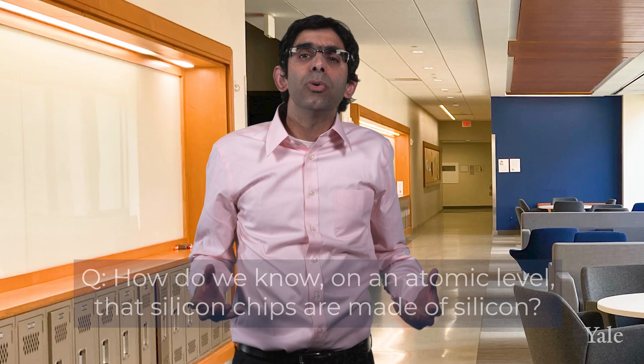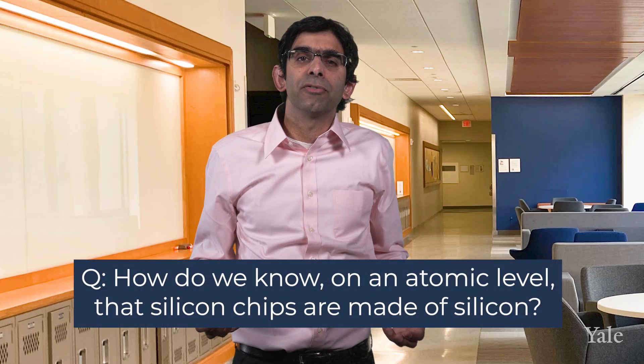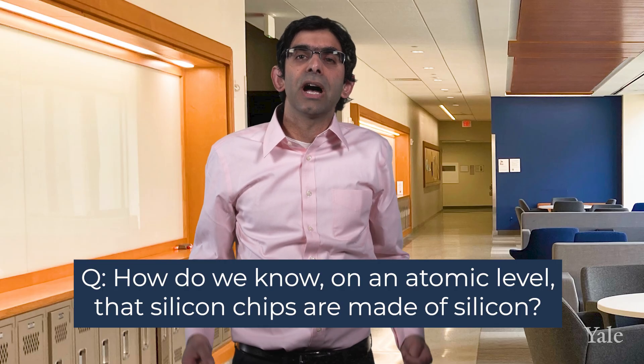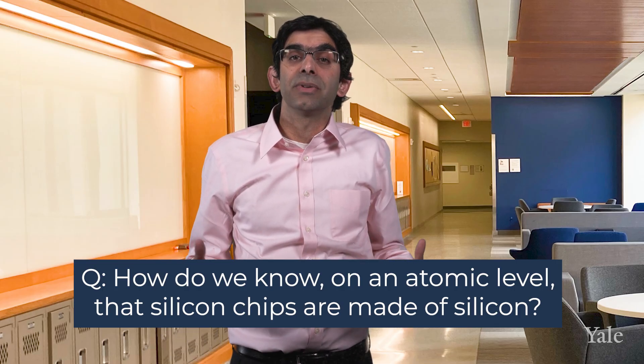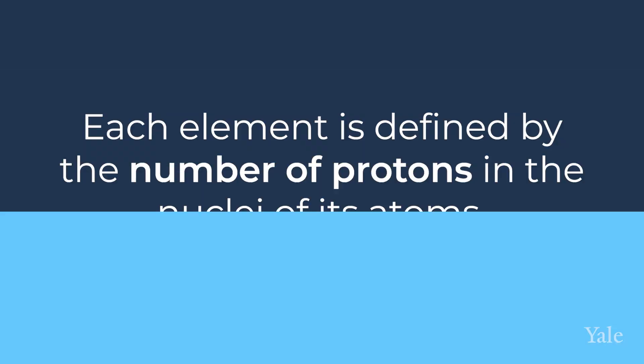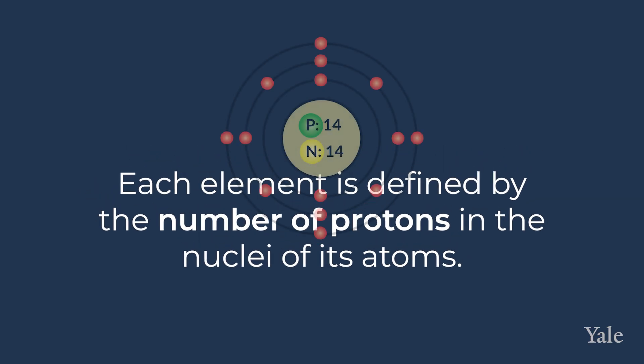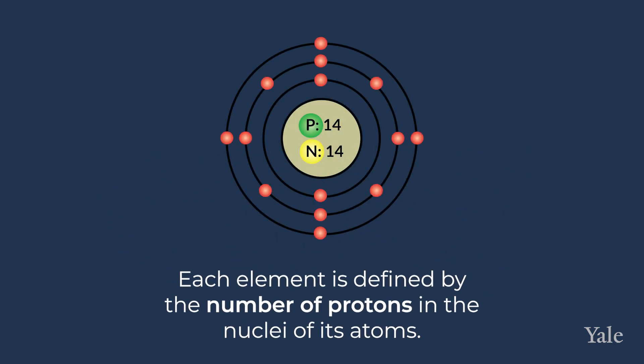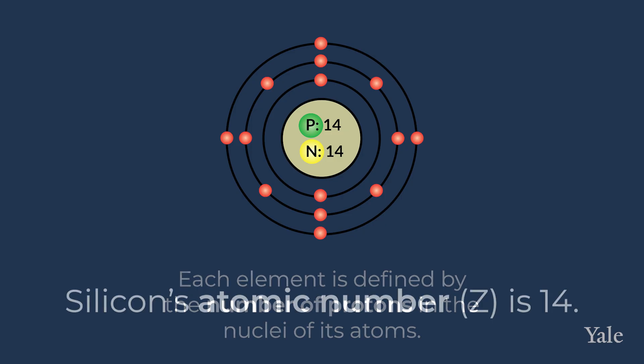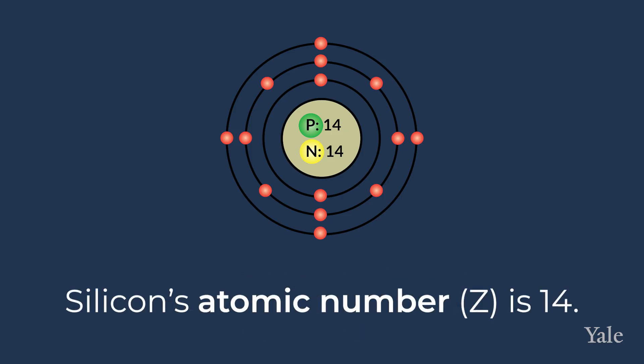Inside your smartphone, there are silicon chips that process information and act like the brain of your phone. But how do we know on an atomic level that these silicon chips are made of silicon and that every atom is a silicon atom? Each element is defined by the number of protons in the nuclei of its atoms. So every single atom of silicon has exactly 14 protons, and we say that silicon's atomic number is 14.